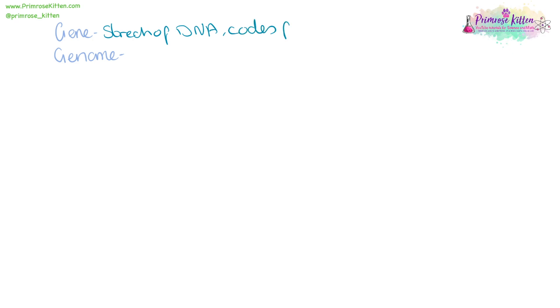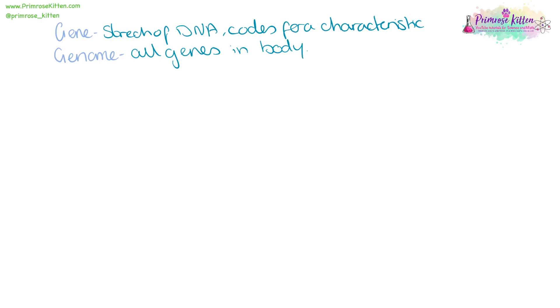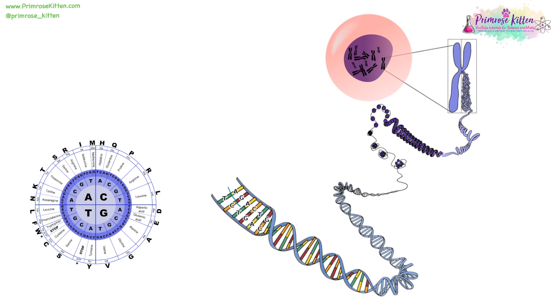A gene is a stretch of DNA that codes for a characteristic. A genome is all the genes in a body, or all of the genes that you have. Each three-letter sequence of DNA is going to code for an amino acid — so here we have A, G, A. That DNA sequence is going to code into the amino acid arginine.